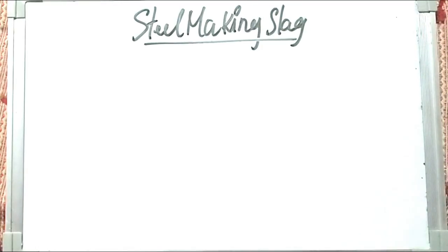Hello guys, this is Avinash and you're watching Everything Metallurgy. In the last lecture we discussed the overview of all the processes taking place in steel making, the different types, and what is primary steel making and secondary steel making. If you have not watched it, I will be leaving the link in the cards so you can check it out.